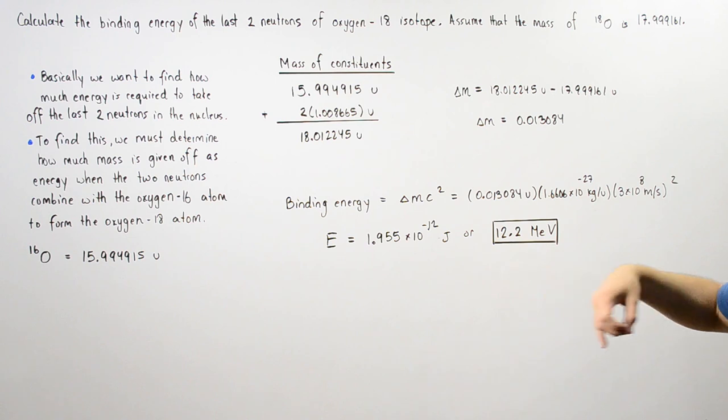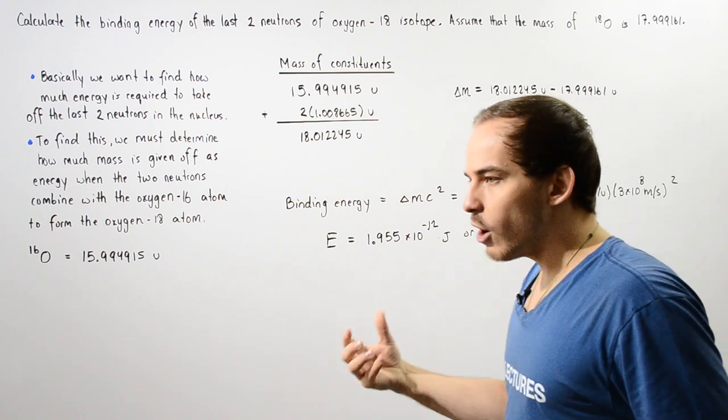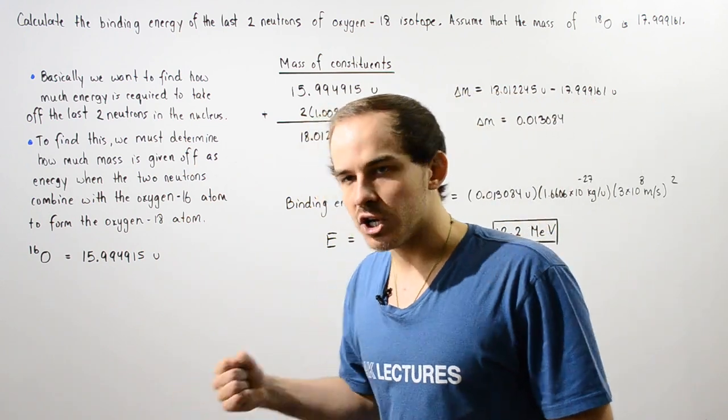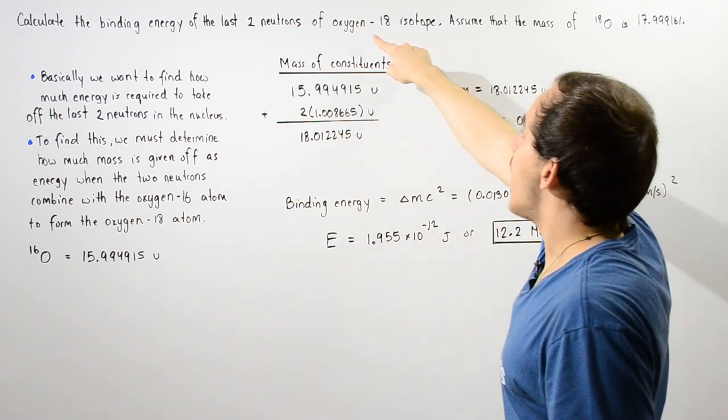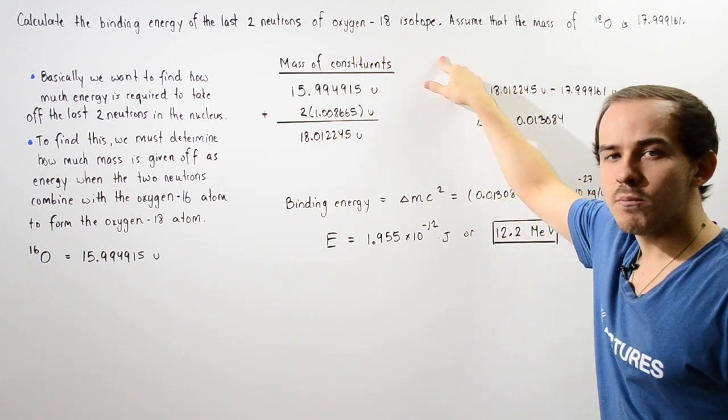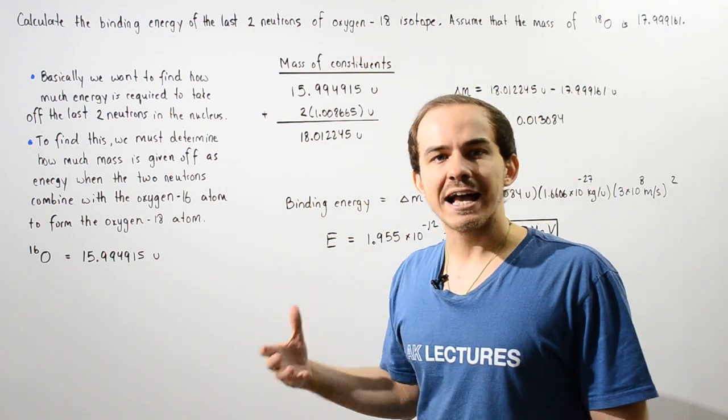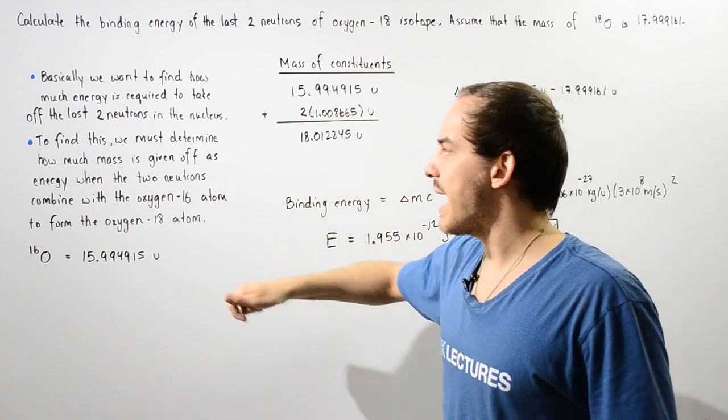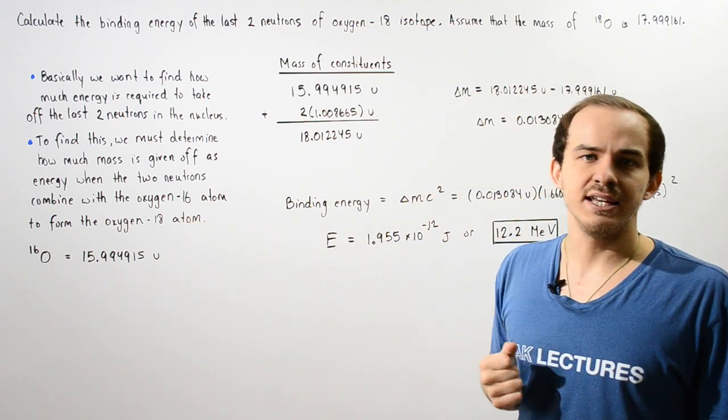This is the binding energy: how much energy we must input into our oxygen-18 isotope to take off those last two neutrons to form back the oxygen-16 atom.